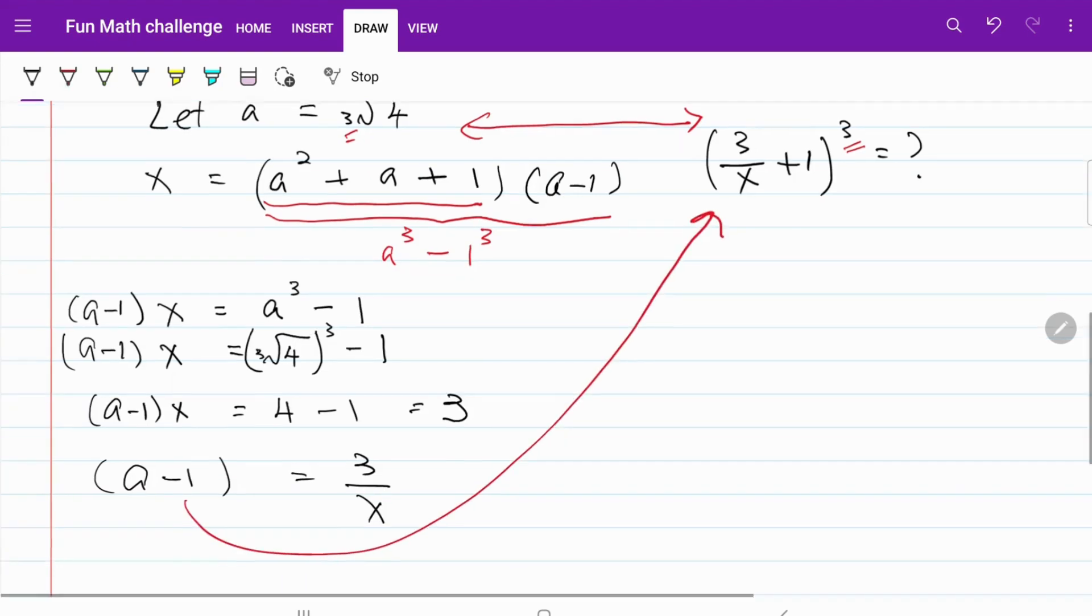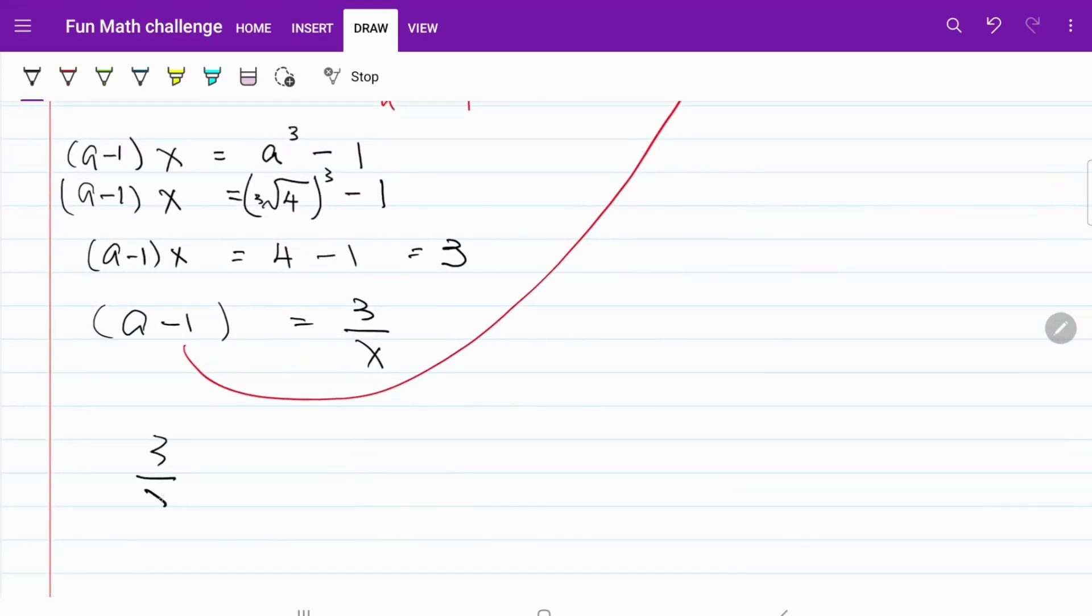So now 3 over x plus 1 cubed is equal to a minus 1 plus 1, cubed. Plus 1 and minus 1 will cancel each other. So what we have now is a cubed, which is equal to the cube root of 4 cubed, and that's equal to 4, which is our final answer.